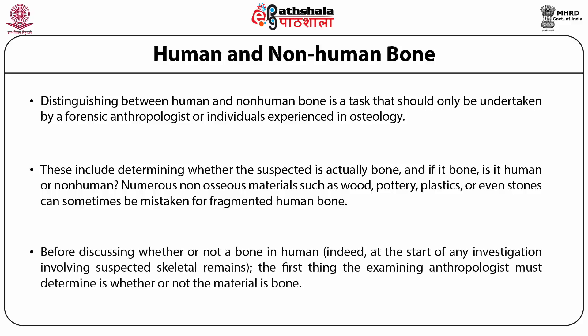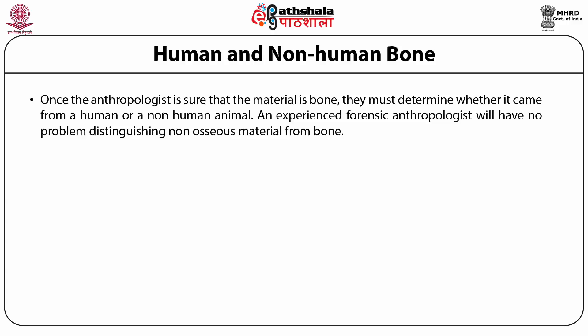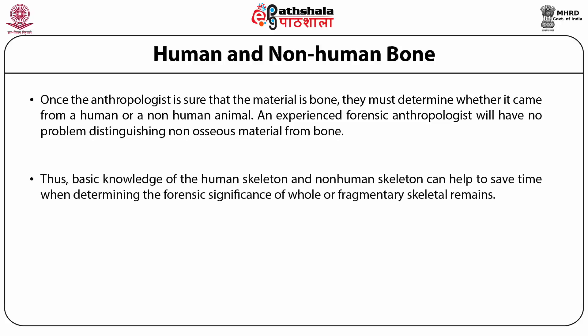Before discussing whether a bone is human, at the start of any investigation involving suspected skeletal remains, the first thing the examining anthropologist must determine is whether the material is bone at all. Once sure that it is bone, they must determine whether it came from a human or a non-human animal. Basic knowledge of the human and non-human skeleton can help save time when determining the forensic significance of whole or fragmentary skeletal remains.